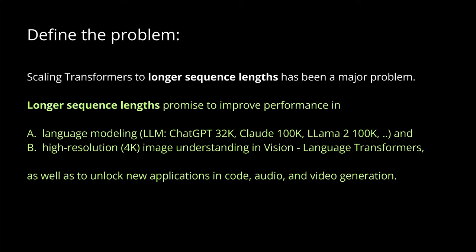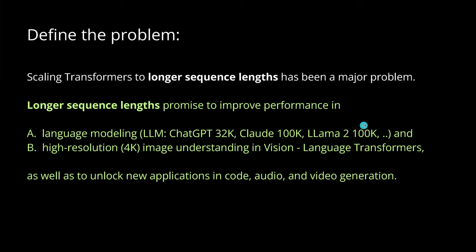Hello community! Today we want to scale our transformers, our LLMs, to longer sequence lengths. This longer context length of our LLMs brings some performance increases. We want our LLM — for example, Jet GPT with 32,000 token length or Claude with a 100k token length — and we want our LLaMA 2 model to also reach a 100k token length.